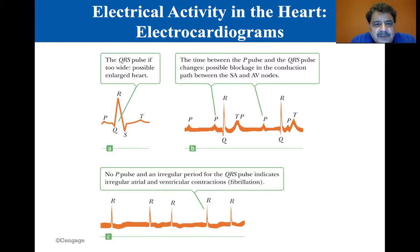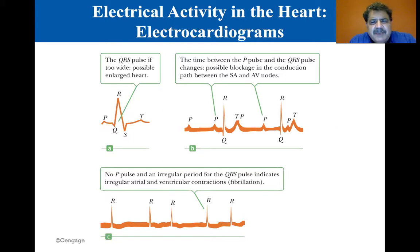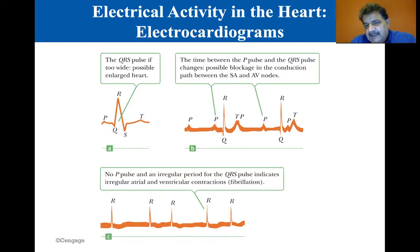If you look at the QRS pulse in pattern A, if the QRS pulse is too wide, it's possibly from an enlarged heart. In B, the time between the P pulse and the QRS pulse changes — possible blockage in the conduction path between the SA and AV nodes. In C, there's no P pulse and an irregular period, so the QRS pulse indicates irregular atrial and ventricular contractions — fibrillation. These are things they look at to determine the state of your heart.